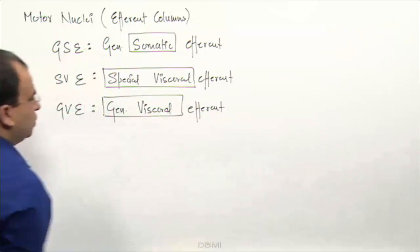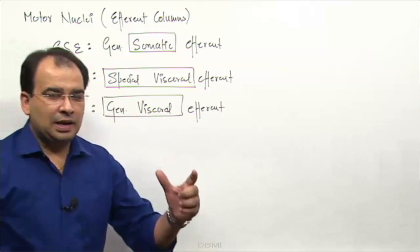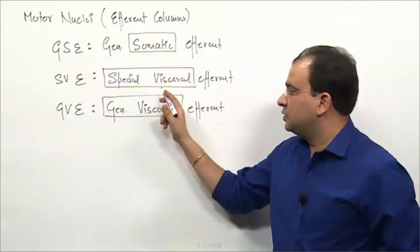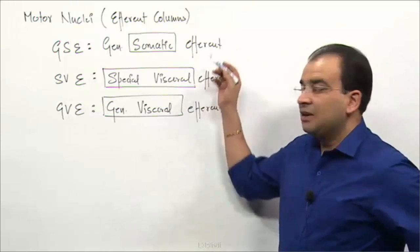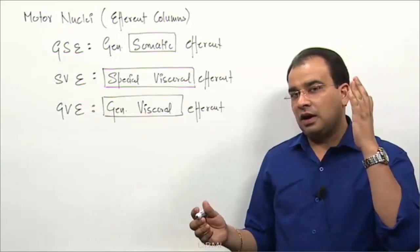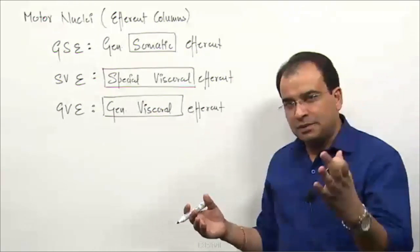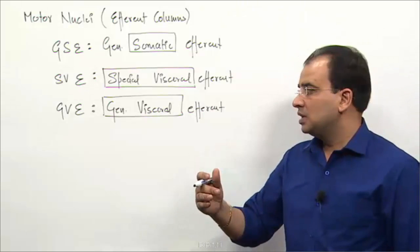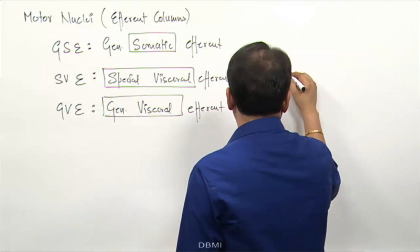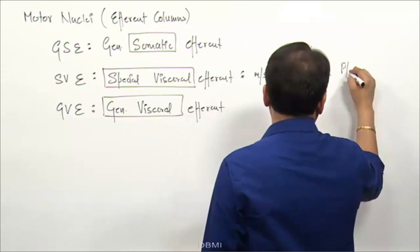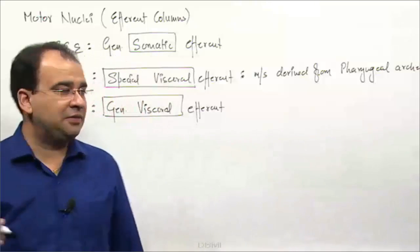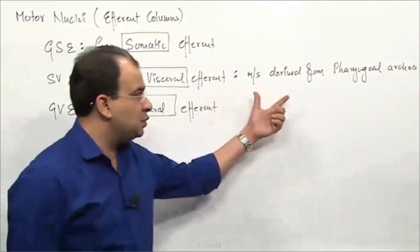Let us start with something more familiar — special visceral efferent. Whenever we look into the efferent column and it is about the special visceral, we are talking about the pharyngeal arches. It is an efferent column, so it definitely has to supply something — specifically muscles. We have skeletal muscles derived from the pharyngeal arches, and the special visceral efferent column will supply those muscles which are derived from pharyngeal arches.